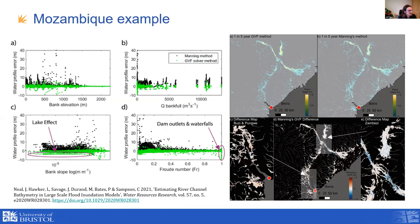Here are the results for Mozambique, where the cyclone Idai results came from. We simulated this tile using our two methods. The black dots show water surface elevations simulated for the one-in-two year flow relative to bank heights using the original Manning's method. In green are the gradually varied flow solver method applied over the entire tile — many thousands of river reaches. We see a dramatic decrease in the bias towards over-prediction of water surface elevation, across a range of elevations, discharges, bank slopes, and Froude numbers.